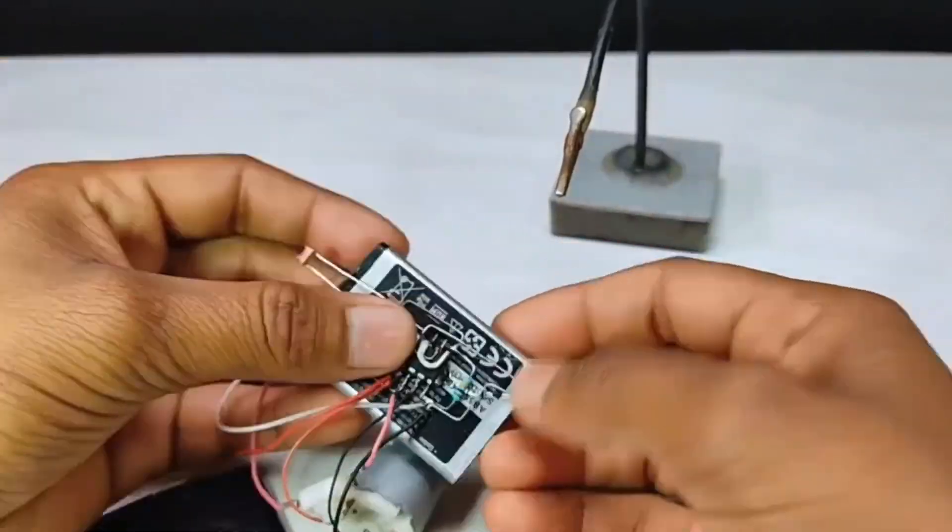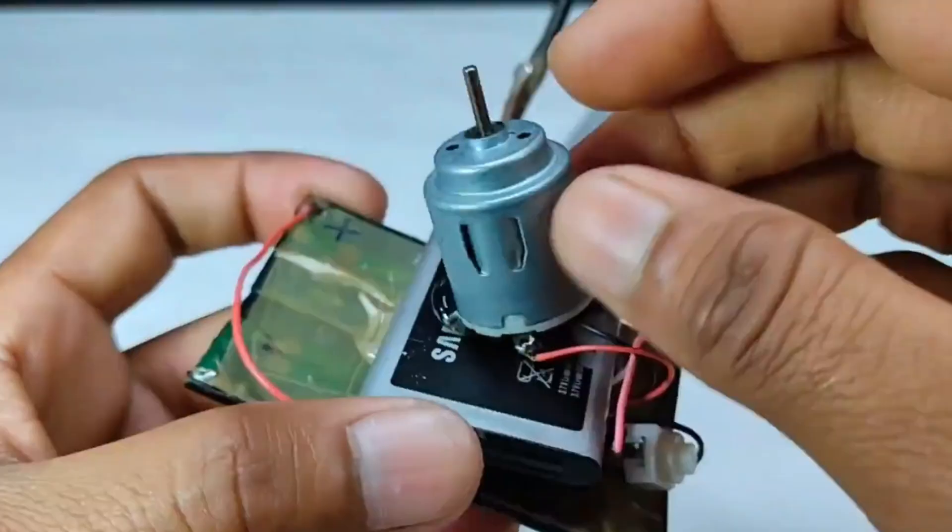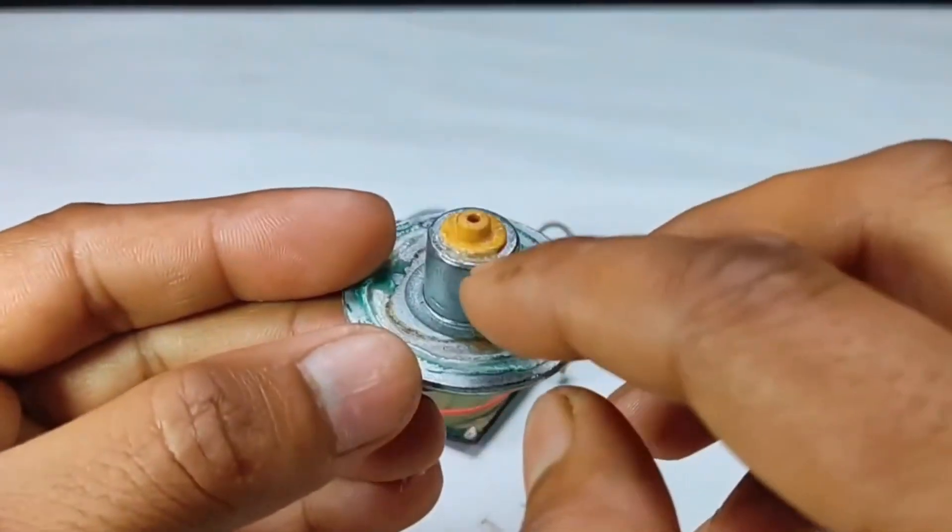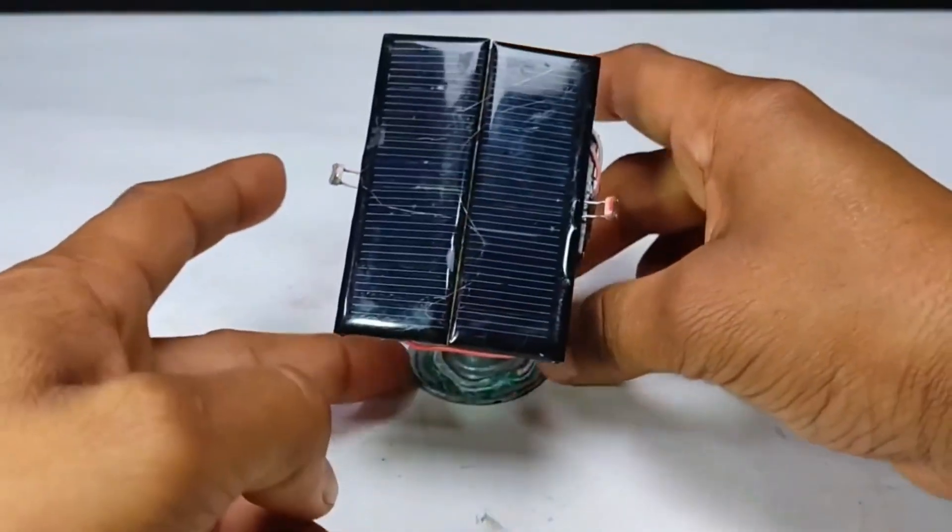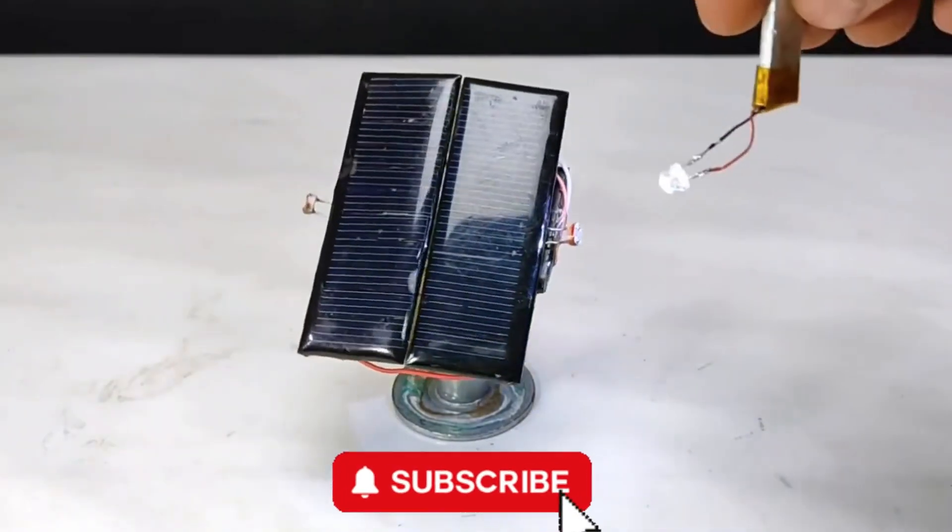Now let's assemble the components. A base is attached to the motor shaft so that the circuit's direction can change as the motor rotates. After assembly, it's time for testing. As we move the light source, the circuit automatically follows it.